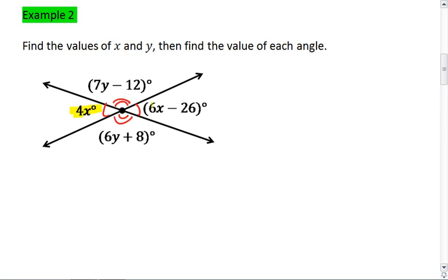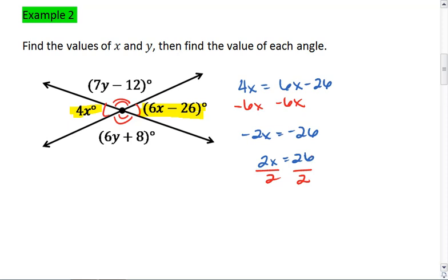Let's start with our x's. We can set 4x equal to 6x minus 26. We can subtract 6x from both sides, giving us negative 2x equals negative 26, which means 2x equals 26. Divide by 2, and we get x equals 13.